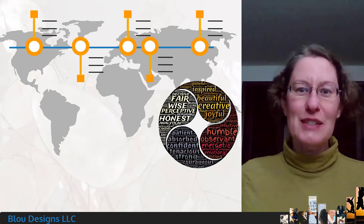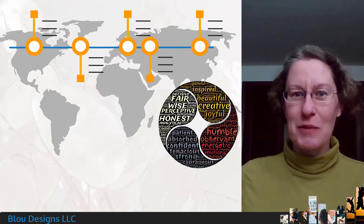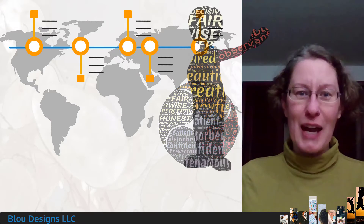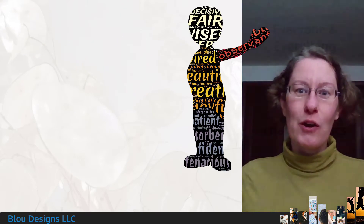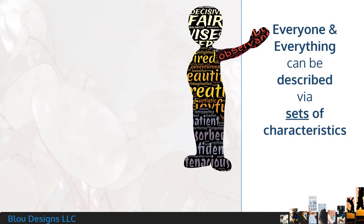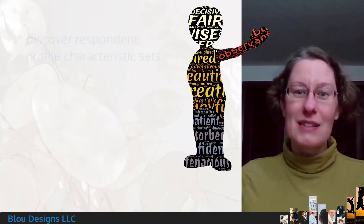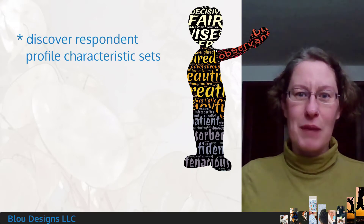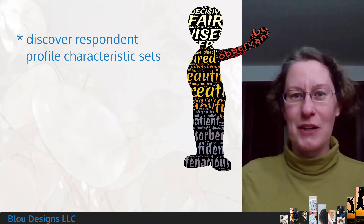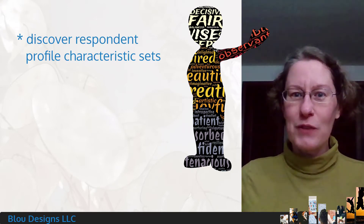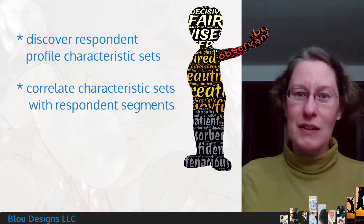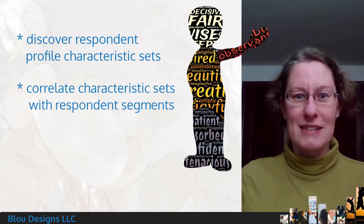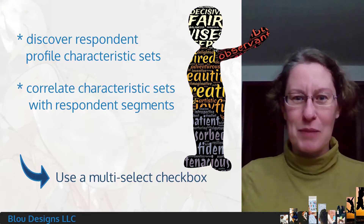The world is a bundle of complex histories and characteristics, and sometimes to really understand someone or something, you have to capture all of that complexity as a bundle — which is another way of talking about the fact that everyone and everything can be described via sets of characteristics. So if you're trying to discover the profile of your respondents with respect to a certain set of characteristics, or figure out how different sets of characteristics might correlate with different segments of respondents, you need a multi-select checkbox question.